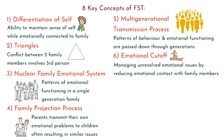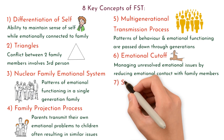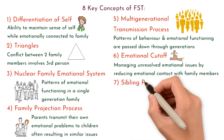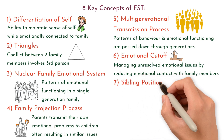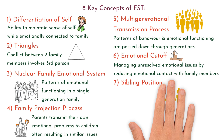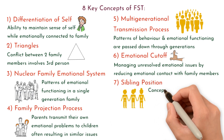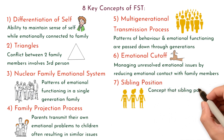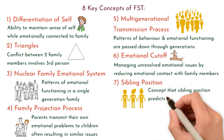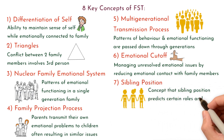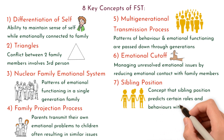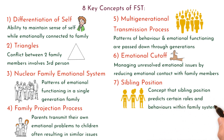7. Sibling position. This concept, based on the work of Walter Toman, suggests that sibling position — for example, the oldest, the middle, or the youngest — can predict certain roles and behaviours within the family system.